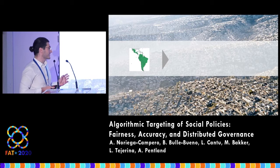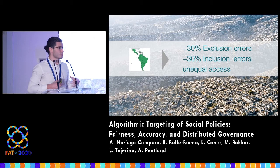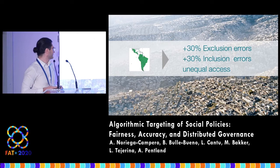And what's the problem? In Latin America, it's estimated that there is up to 30% exclusion errors — that means population that should receive a social benefit according to program rules but do not. Also 30% inclusion errors, which is the opposite, as well as unequal access to different subpopulations.